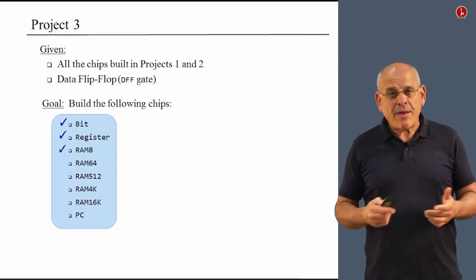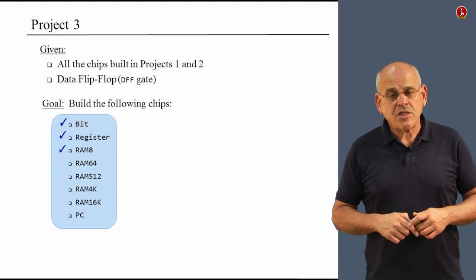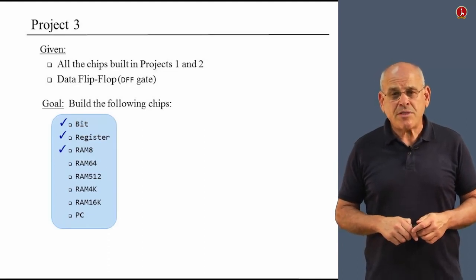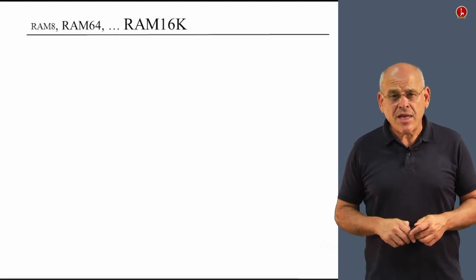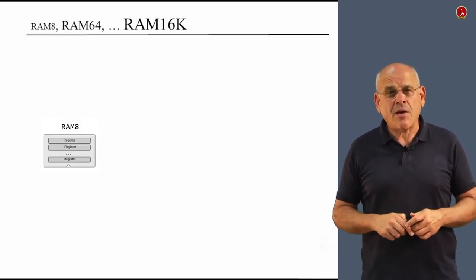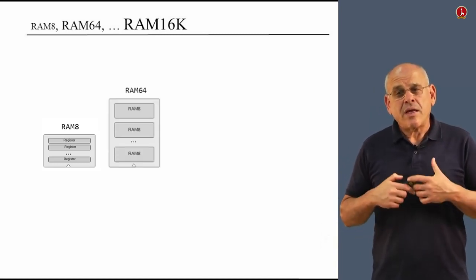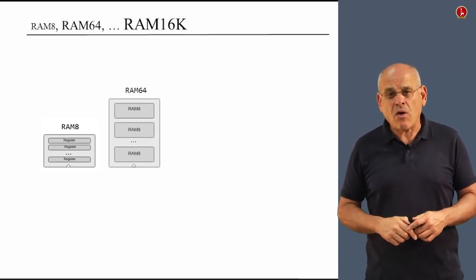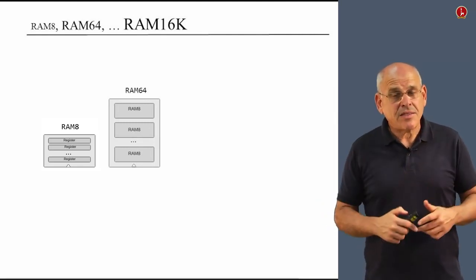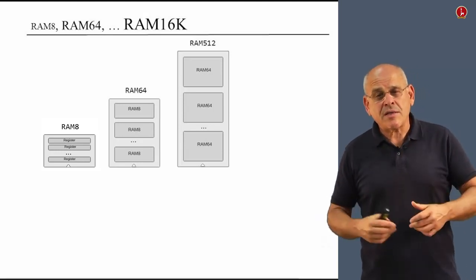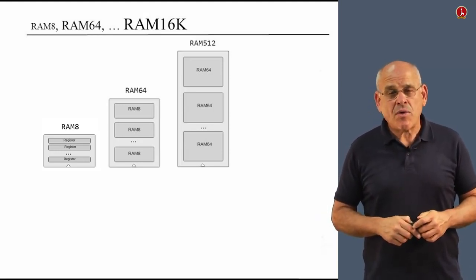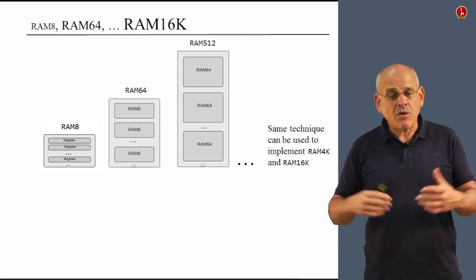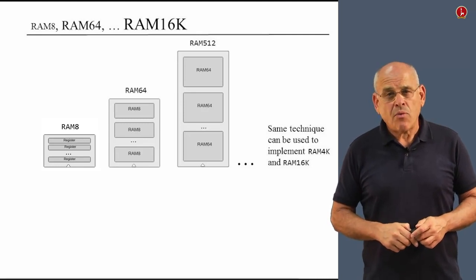Moving along, we have implemented the first three chips and we are ready to construct the more elaborate RAM64, 512 and so on chips in the hierarchy. So this is our next task and here is how we do it. We start with the RAM chip that we just discussed. And we stack together eight such RAM chips. And what results is what we call a RAM64. We can take eight such RAM64s, put them together to yield the next chip in our hierarchy, which is RAM512. And we can do two more steps of a very similar nature and end up with the most elaborate RAM chip, the one that we have called RAM16K.